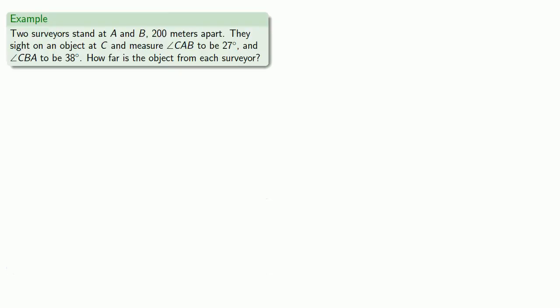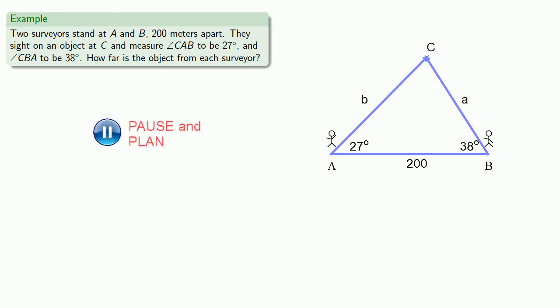So let's see how we can use this. Suppose I have two surveyors standing at points A and B, 200 meters apart. They sight on some object at C, and measure the two angles to be 27 degrees and 38 degrees. How far is the object from each of our surveyors? To begin with, we should assume that this is a right triangle because I'd never give you something that wasn't. Oh wait, you're confusing me with somebody who's nice. We should check to see if we have a right triangle by finding that third angle.